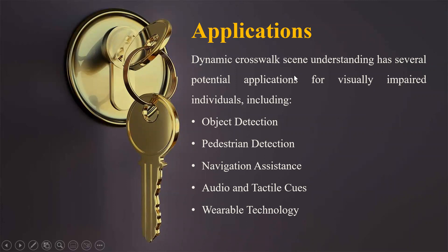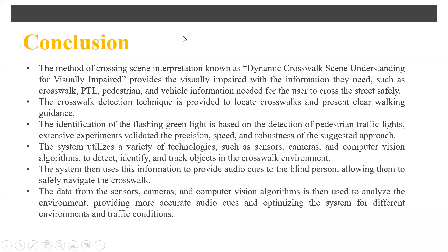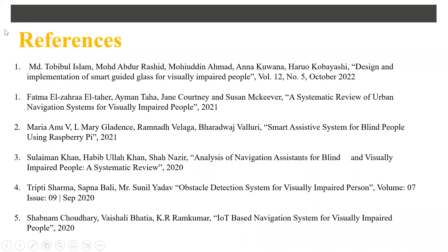Some applications of the dynamic crosswalk scene understanding system include object detection, pedestrian detection, navigation assistance, audio and tactile cues, and wearable technologies. In conclusion, the dynamic crossing scene understanding method provides visually impaired users the information they need — such as crosswalk, PTL, pedestrian, and vehicle information — to cross the street safely. The crosswalk detection technique locates crosswalks and presents clear walking guidance. Identification of the flashing green light is based on detection of pedestrian traffic lights. Extensive experiments validated the precision, speed, and robustness of the suggested approach. The system uses sensors, cameras, and computer vision algorithms to detect, identify, and track objects, then provides audio cues to allow the blind to navigate through crosswalks safely. These are the references used for the literature survey papers. Thank you.